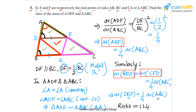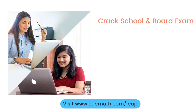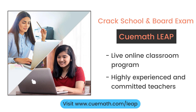This is what we obtained in the first approach also. In the first approach, we directly showed that triangle DEF is similar to triangle ABC using SSS similarity, and from there found the ratio of areas. In the second approach, we took a slightly longer path — we calculated the areas of ADF, BED, and CFE in terms of the area of triangle ABC, and subtracted all three to find the area of DEF. Both approaches are correct, but personally I prefer the first approach because it is much shorter. This completes question number 5. To learn more about how QMath can help you crack school and board exams, explore QMath Leap, a live online classroom program run by highly experienced and committed teachers.